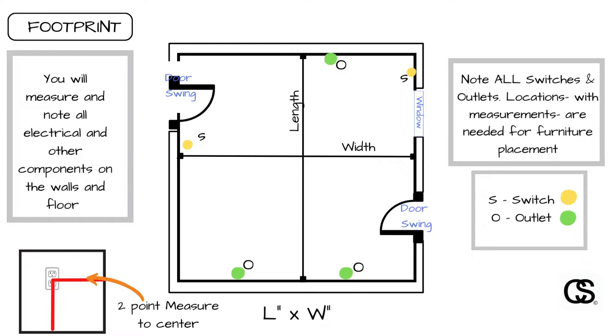Step seven: measure and locate switches, outlets, security components, HVAC vents, and any controls on the wall or that intrude into the space. Use a two-point measuring system. For example, for a light switch, measure from the edge of the door molding to the center of the switch horizontally, then measure up from the floor to the center of the switch vertically. Then measure the switch itself — whether it's a two-by-three or whatever size — so you have the center point and the dimensions of the component, and can notate it on your plan.